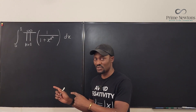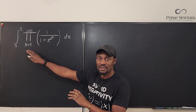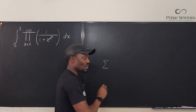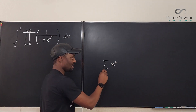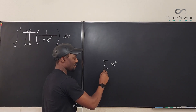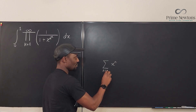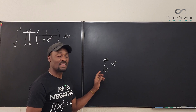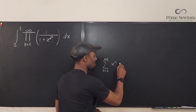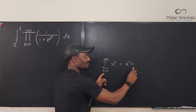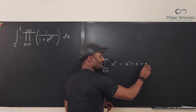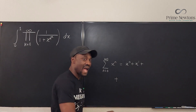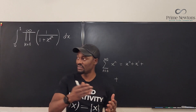This is the product notation, just as you have the summation notation. For example, the sum of x to the n from n=0 to infinity means x to the 0 plus x to the 1 plus x to the 2, and you just keep going to infinity. That's what summation notation means — you keep adding. The brother to this is the product notation.